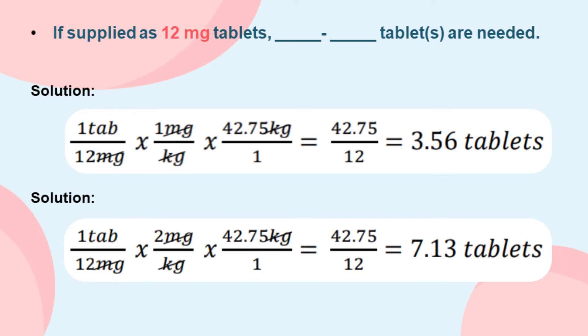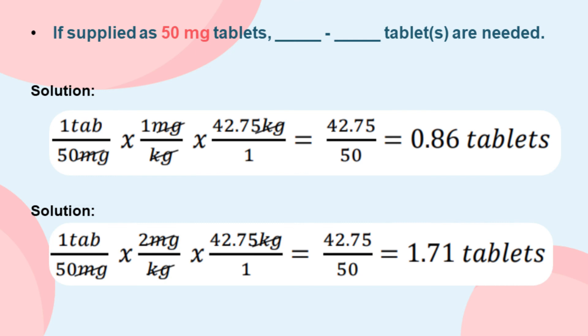After converting pounds to kilograms, substitute the given into the formula. Cancel out the like terms, multiply, and divide. For the second dose using 2 milligrams per kilogram, again substitute the given into the formula, cancel out terms, multiply, and divide to get the answer for 12-milligram tablets.